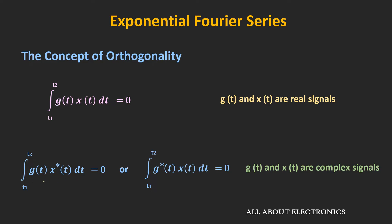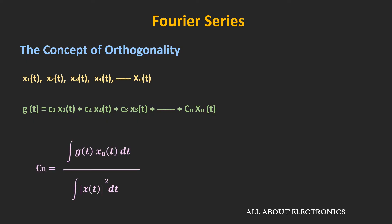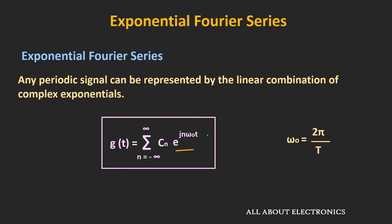When we multiply one signal with the complex conjugate of another signal, integrate over finite time, and that integration equals zero, then the two signals are orthogonal. If we have a complete set of orthogonal signals, any signal g can be represented by their linear combination, and the coefficients are found using a corresponding expression. If the orthogonal signals are complex, there is a slight change — the complex conjugate of the signal appears instead. In this exponential Fourier series, the complex exponentials are indeed orthogonal signals.